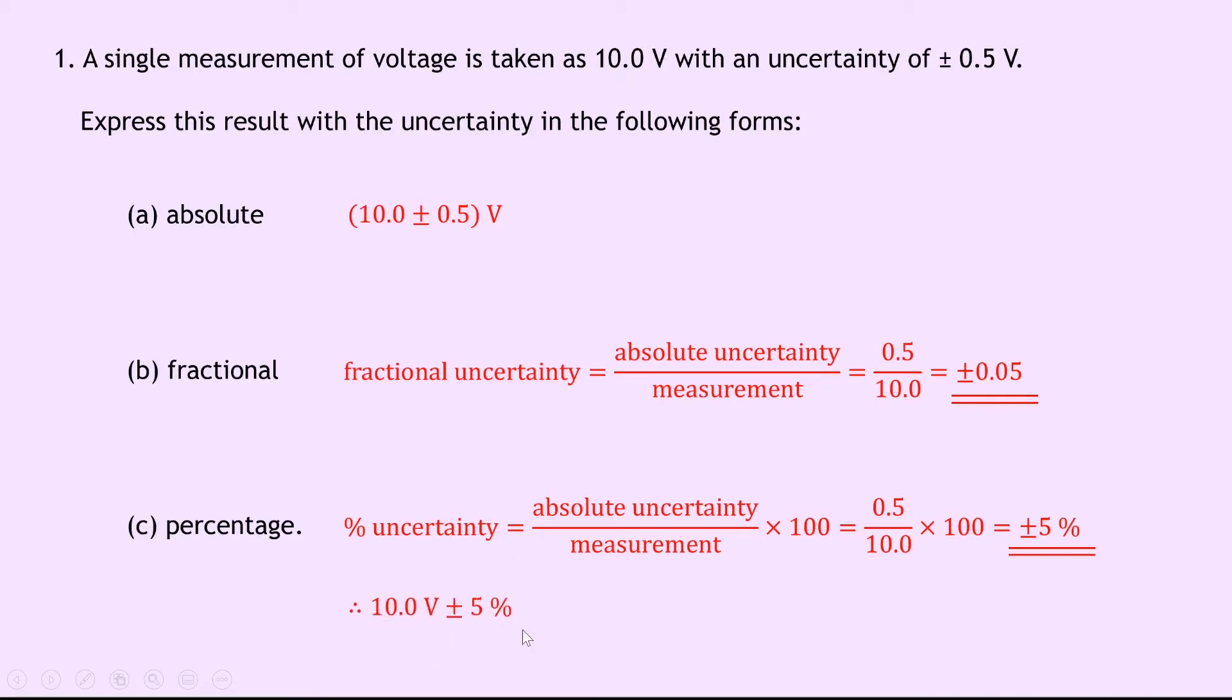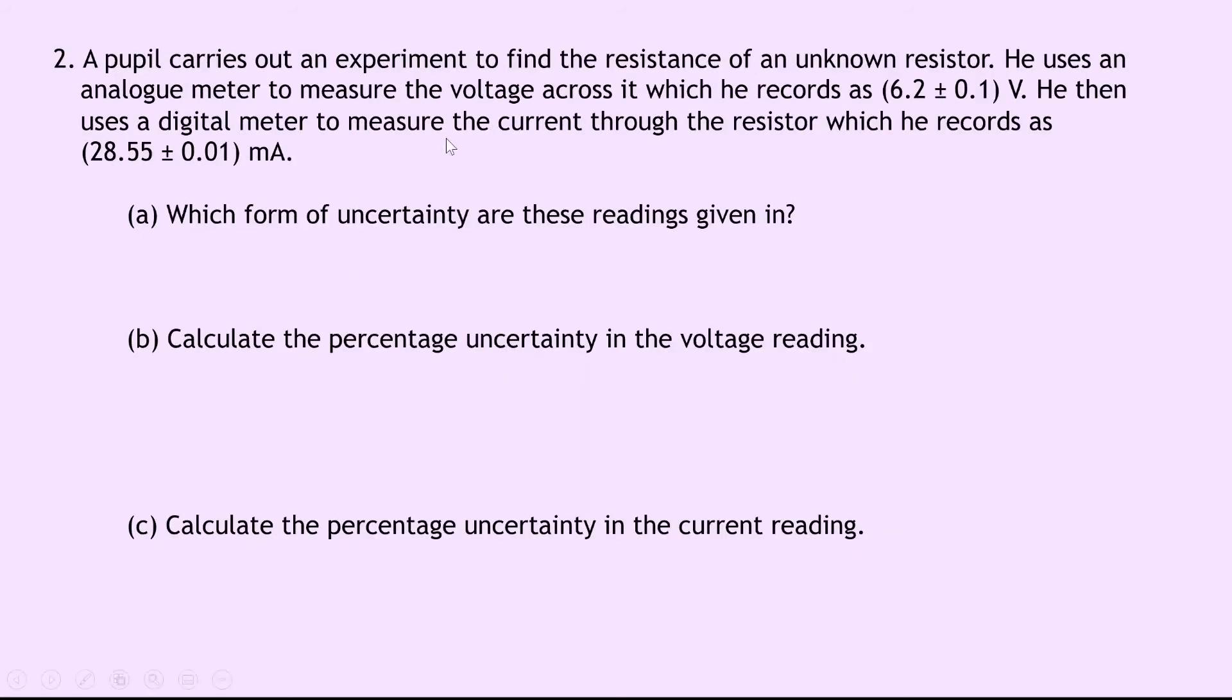Question 2 says that a pupil carries out an experiment to find the resistance of an unknown resistor. He uses an analog meter to measure the voltage across it, which he records as 6.2 plus or minus 0.1 volts. He then uses a digital meter to measure the current through the resistor, which he records as 28.55 plus or minus 0.01 milliamps.